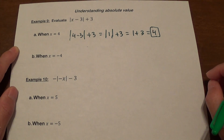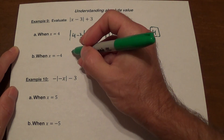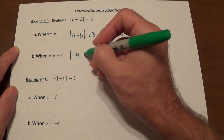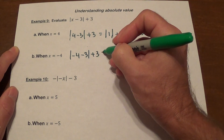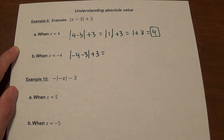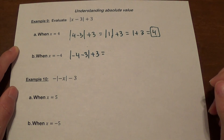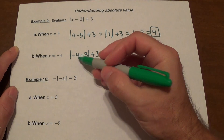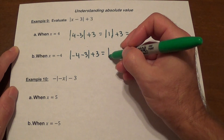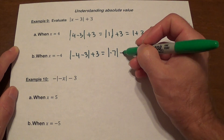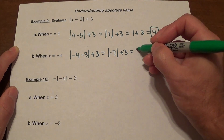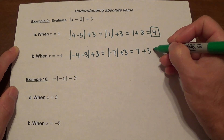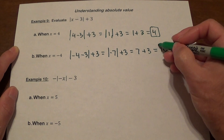What about x equals negative 4? We substitute negative 4 — or as students like to say, plug it in, though the proper term is substitution. Negative 4 minus 3 is negative 7, so we have the absolute value of negative 7, which is 7, plus 3. The answer is 10.